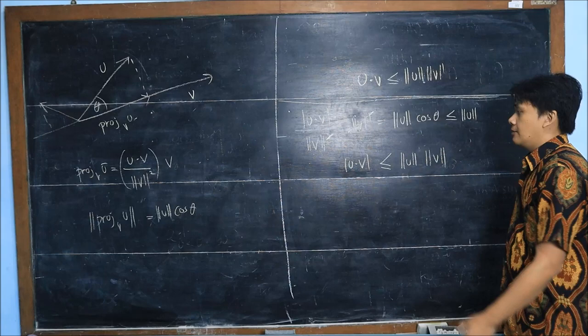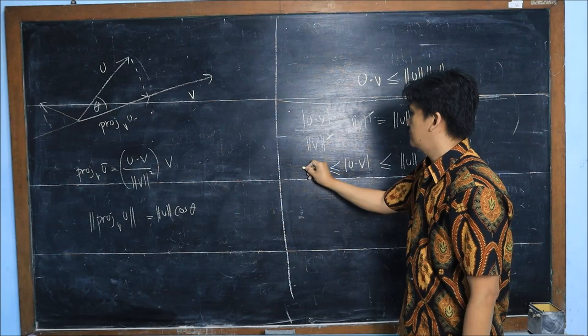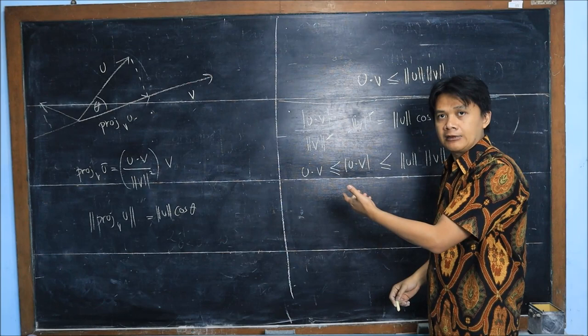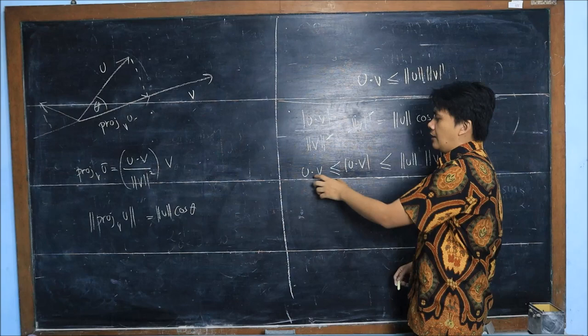But this absolute value is definitely greater than or equal to the dot product of u and v, since this value can be negative. If it is positive, it is exactly the same as this one, but if it is negative, that is certainly less than the absolute value.